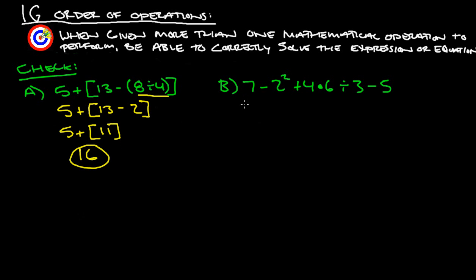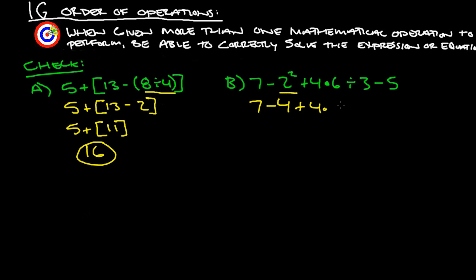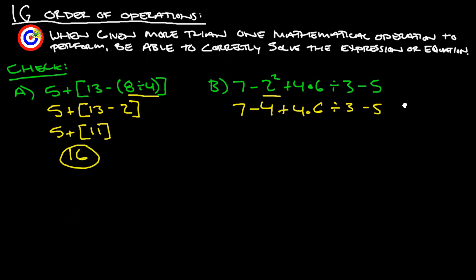For problem B, we do exponents first: 2 squared is 4 — we don't take negative 2 squared unless it were in parentheses. So we have 7 minus 4, plus 4 times 6 divided by 3, minus 5.